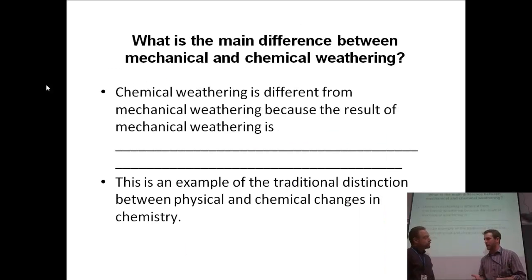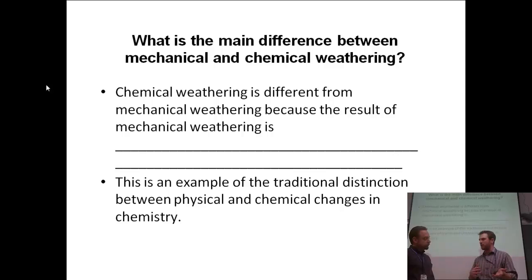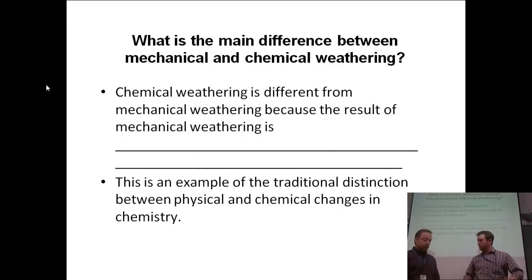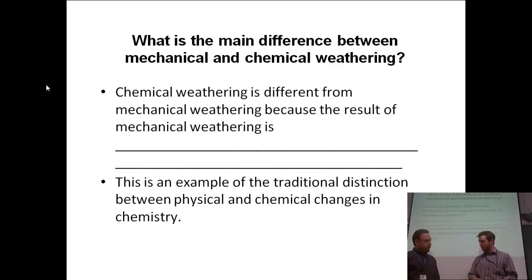There's a big difference between mechanical and chemical weathering. Chemical weathering was different from mechanical weathering because mechanical weathering was breaking things — increasing the surface area and making more of it. Like taking a big piece and smashing it: same stuff, just lots of pieces. With chemical weathering, we're actually changing the chemical composition of it — you're getting brand new things that you never had before.